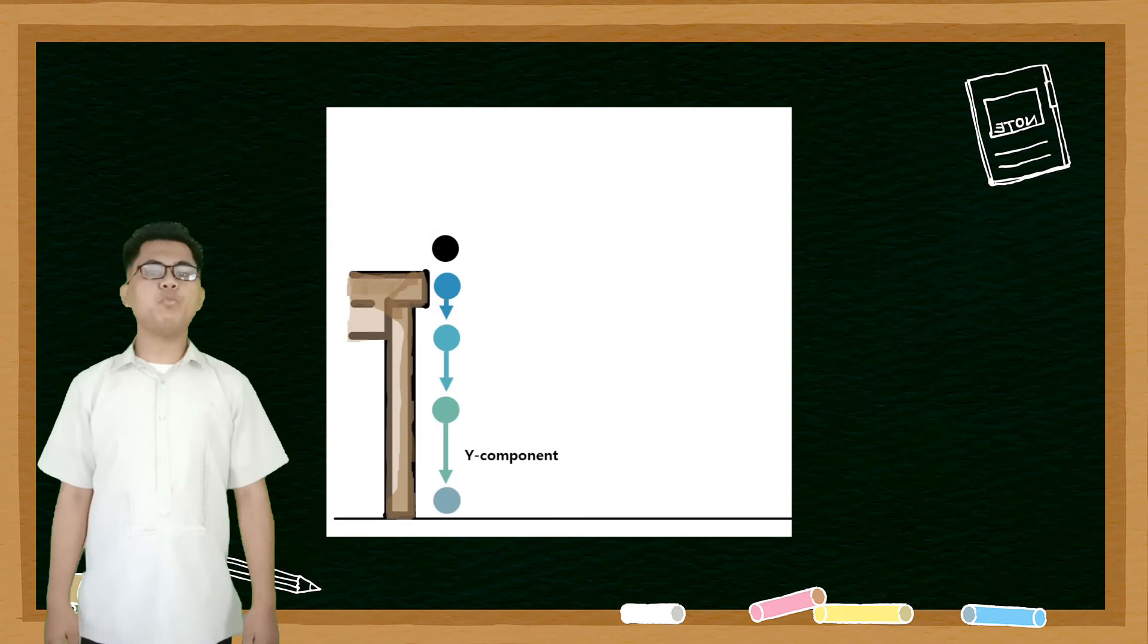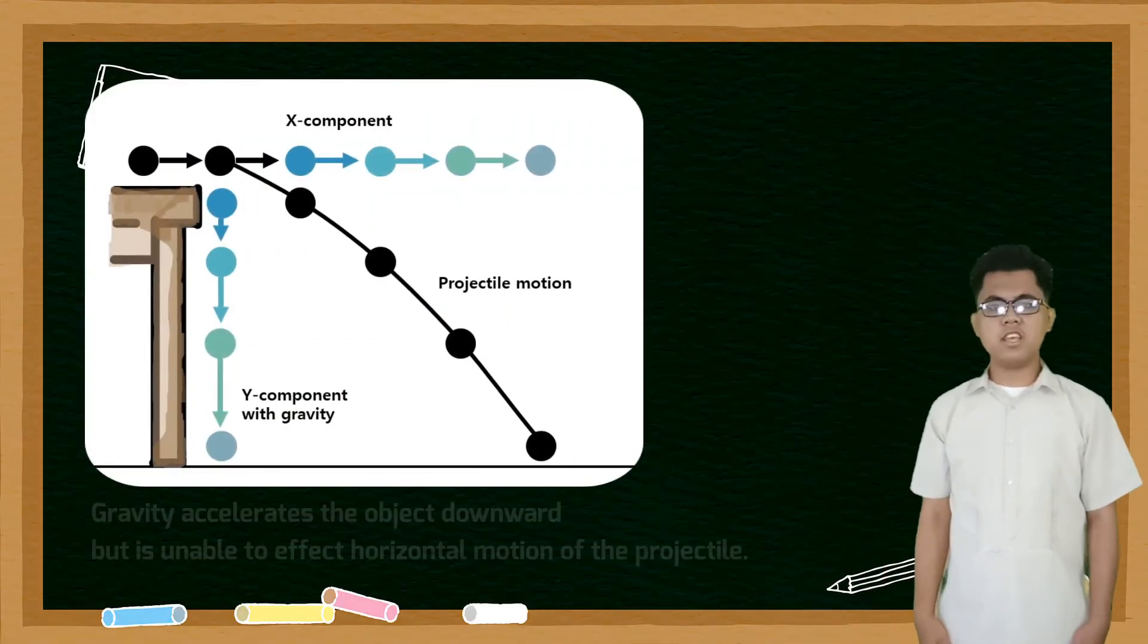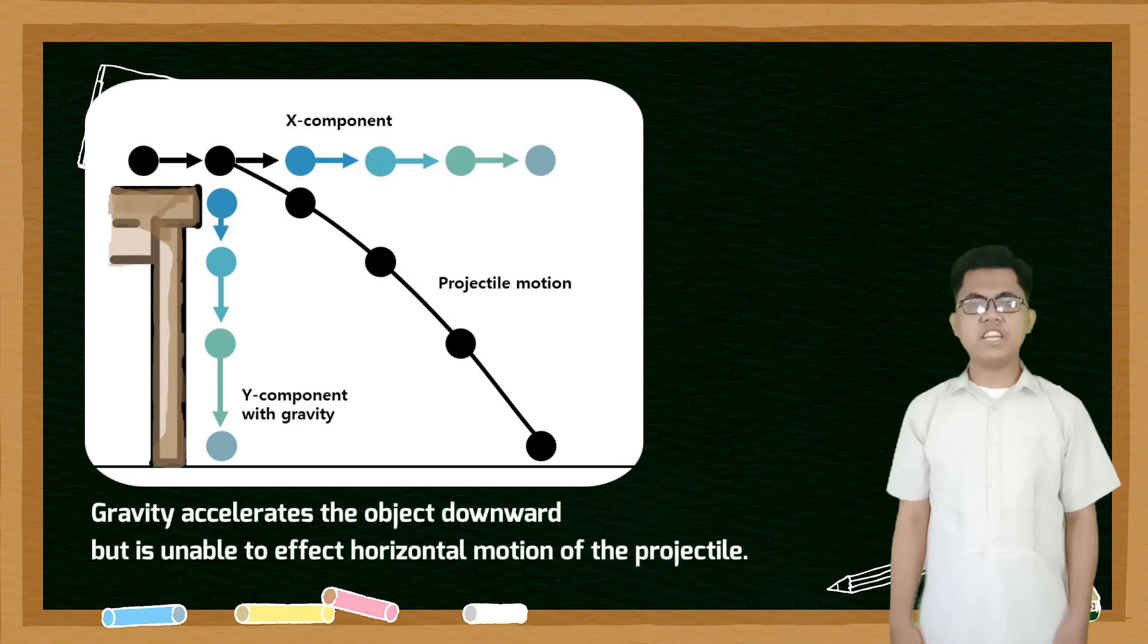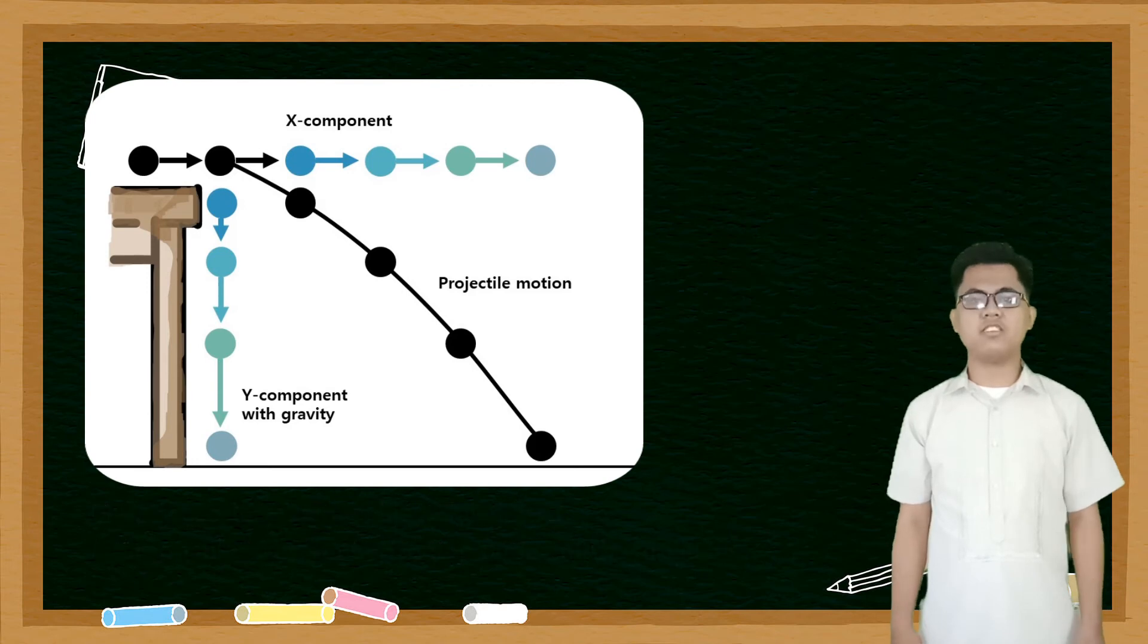If we drop the ball from the edge of the table, this is how its motion will look like. The vertical motion of the object is acted by gravity. Therefore, it will fall. We can see in this motion that gravity accelerates the object downward, but it isn't able to affect the horizontal motion of the projectile.